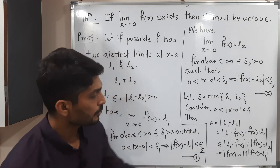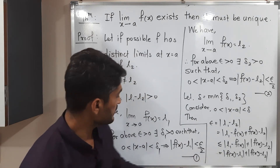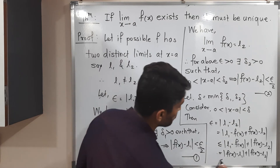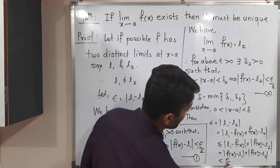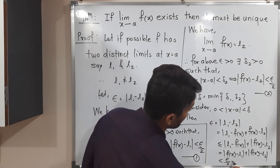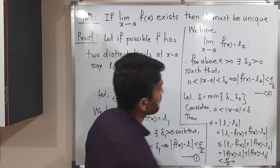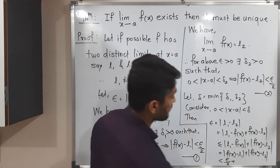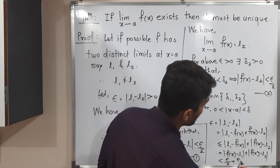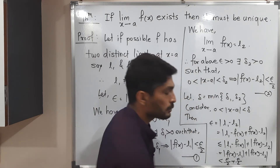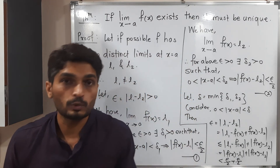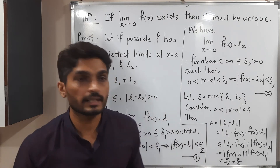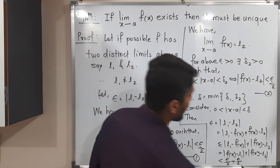Now, mod(f(x) - L1) is less than epsilon by 2 from Statement 1, and mod(f(x) - L2) is also less than epsilon by 2 from Statement 2. So the sum is less than epsilon/2 plus epsilon/2, which equals epsilon.